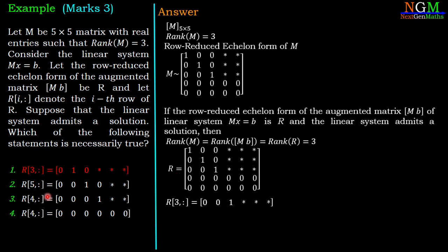The second option is about the fifth row. In the second option, the fifth row is non-zero, but we have the fifth row is zero. So the second option is also wrong.